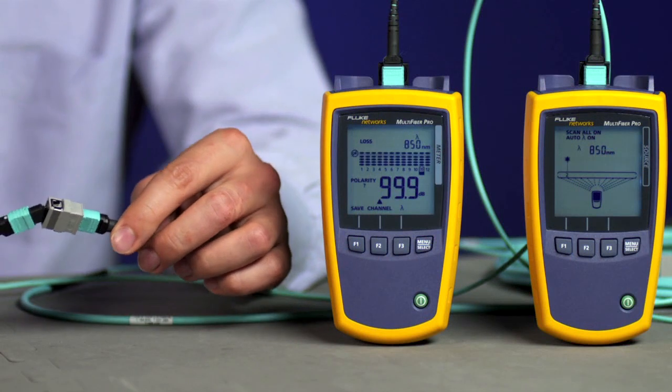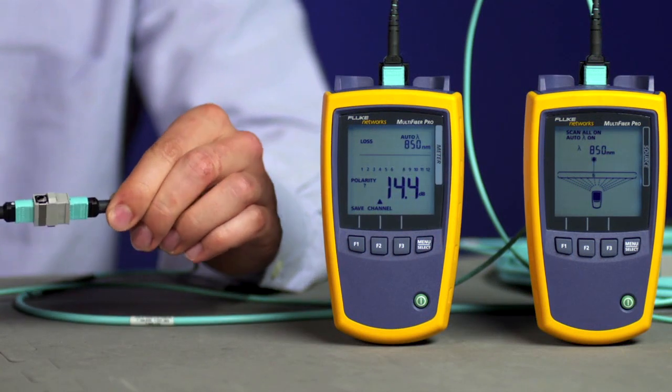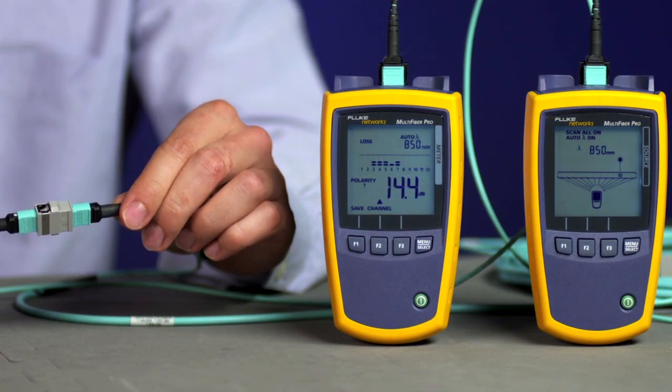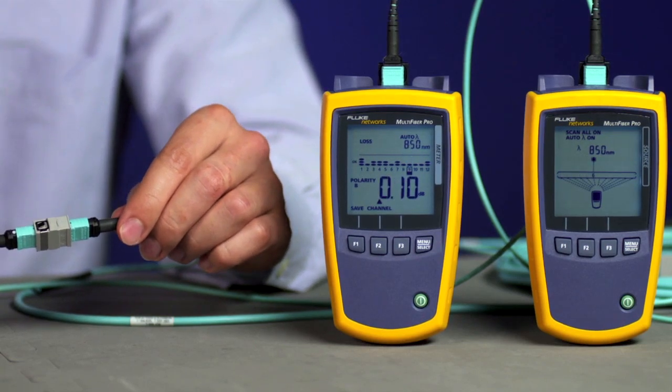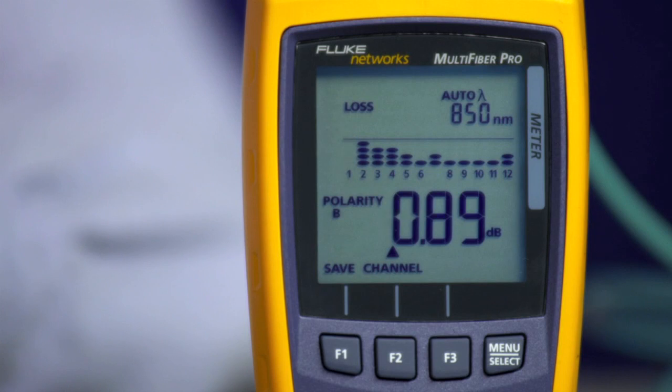Now simply connect your test cords to the MPO trunk cable, and in less than 6 seconds you'll have the loss and polarity measurements for all 12 fibers. The simple user interface allows you to easily determine if the cable passes the loss criteria you set. Any fiber that has excessive loss will be easy to spot in the simple bar graph.